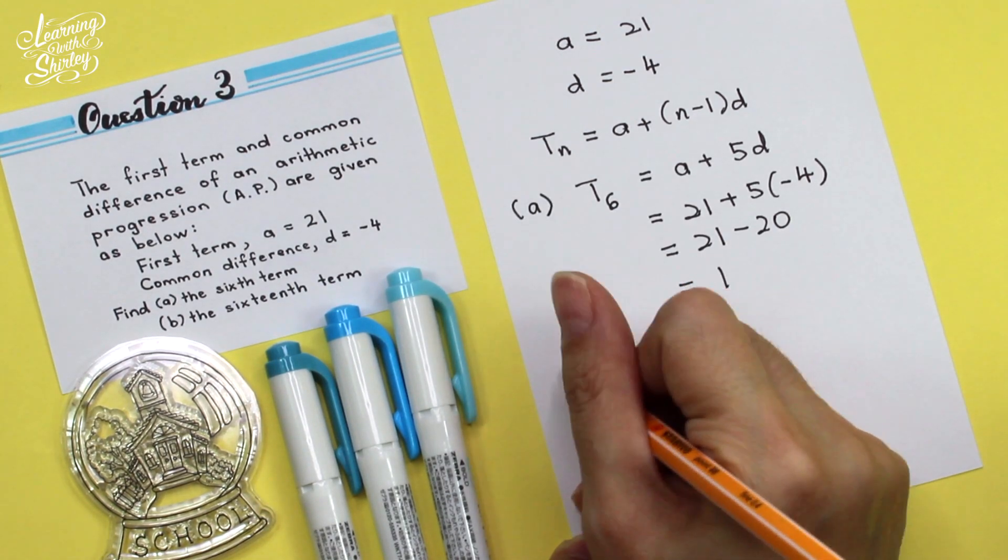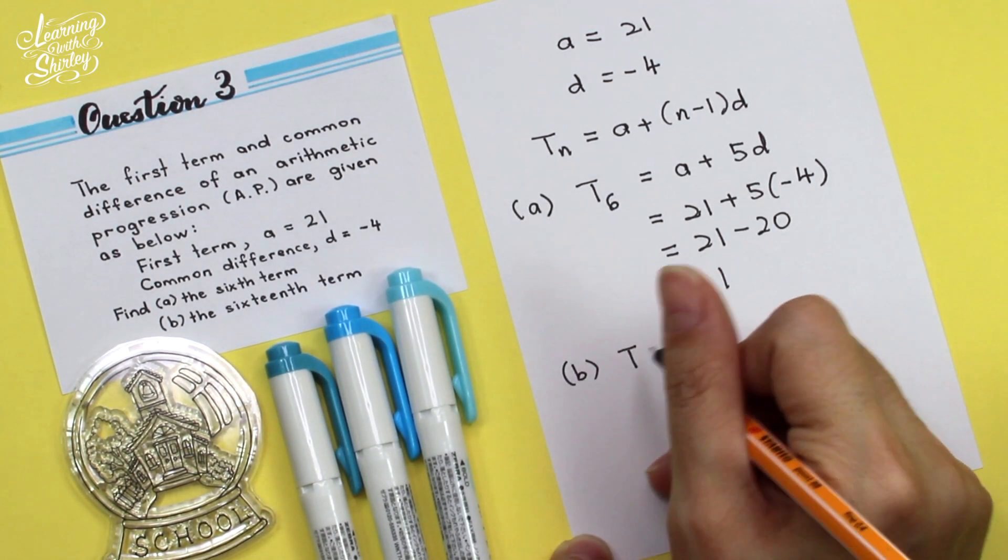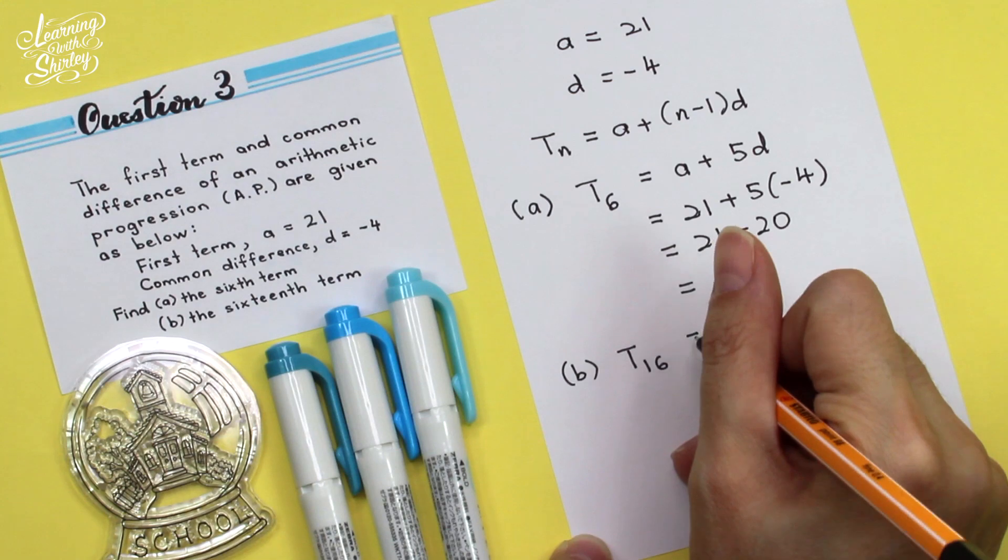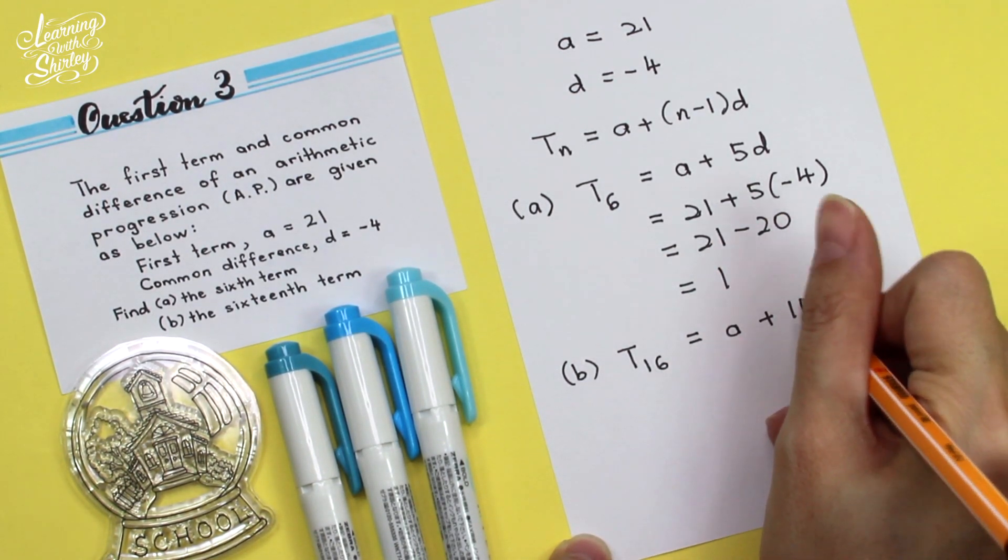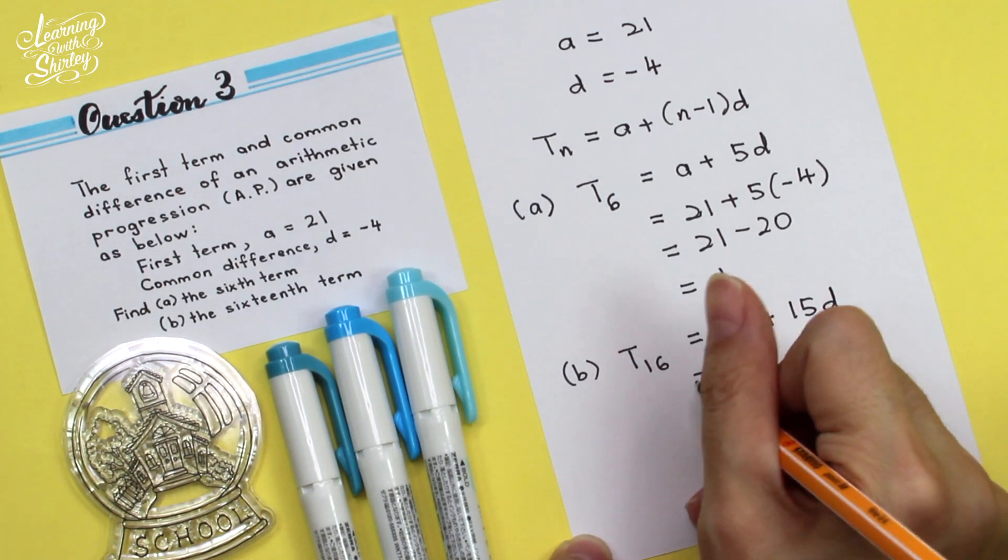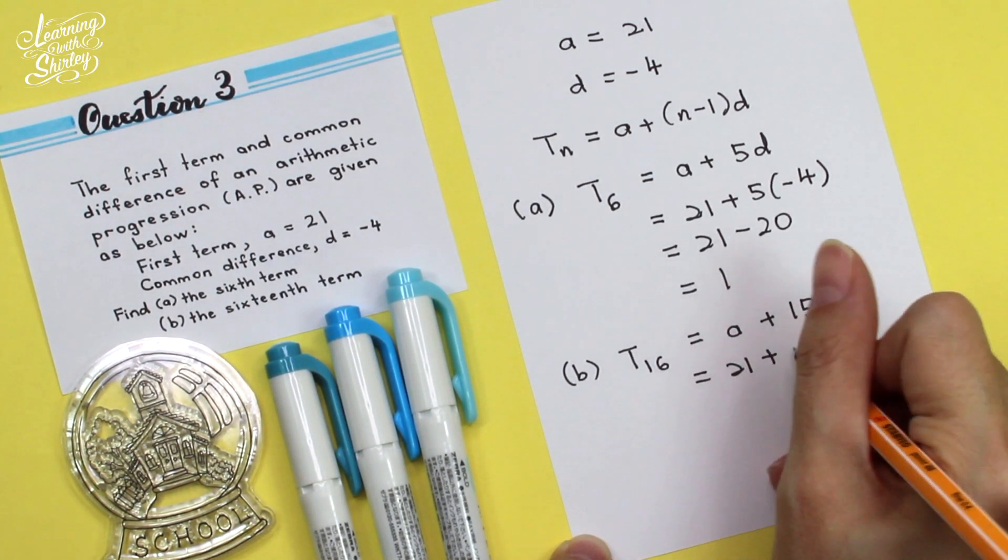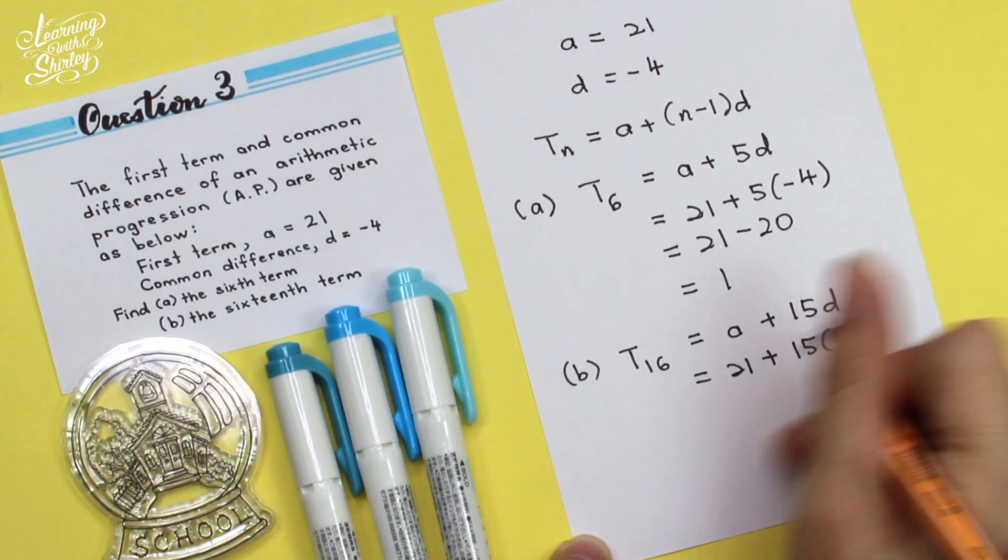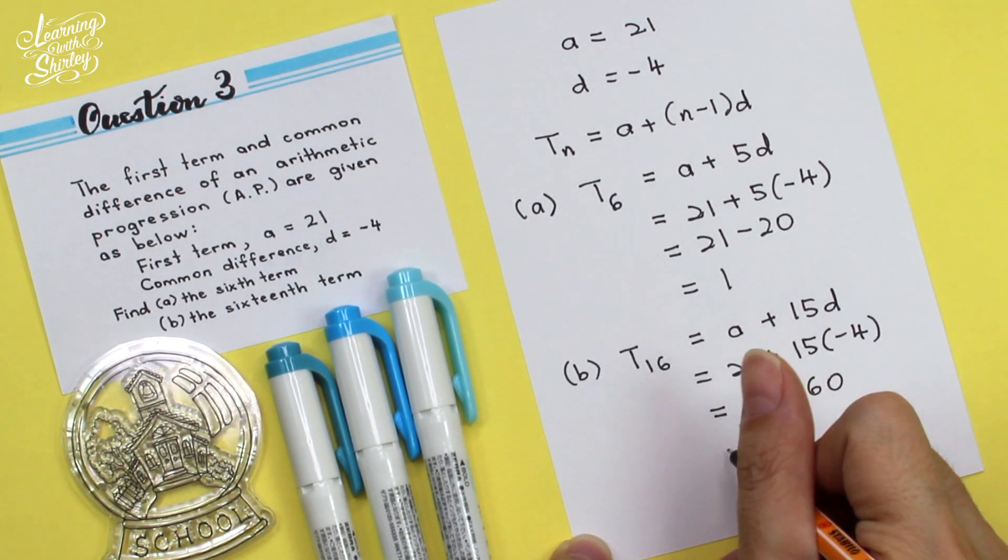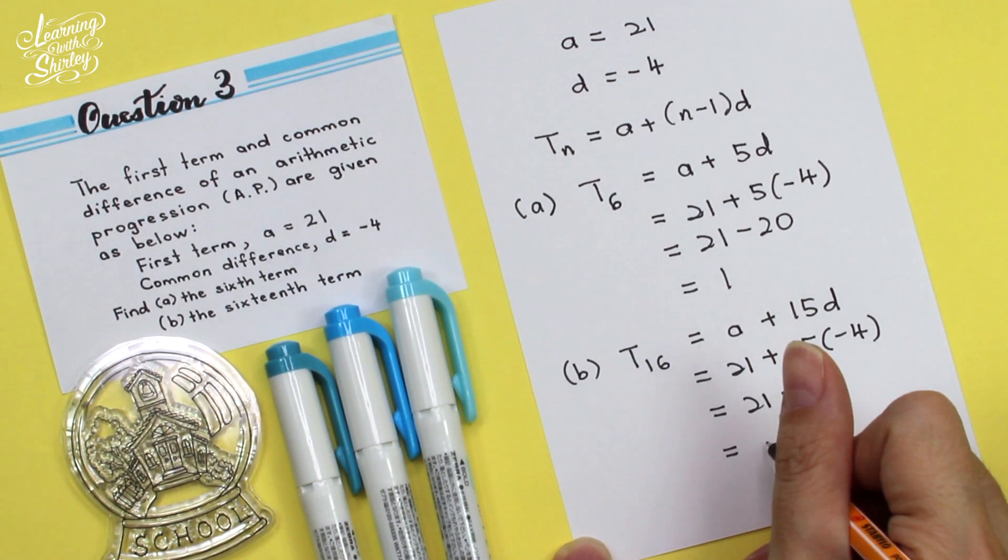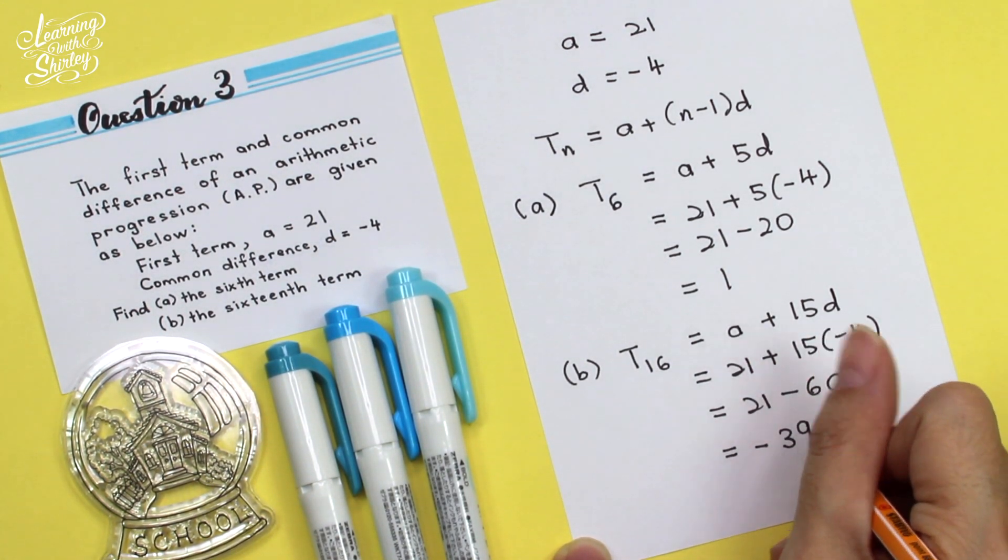For B, to find the sixteenth term, means find T16. So T16 is equal to A plus 15, D. So equals 21 plus 15 times negative 4, which is equal to 21 minus 60. So the final answer is equal to negative 39.